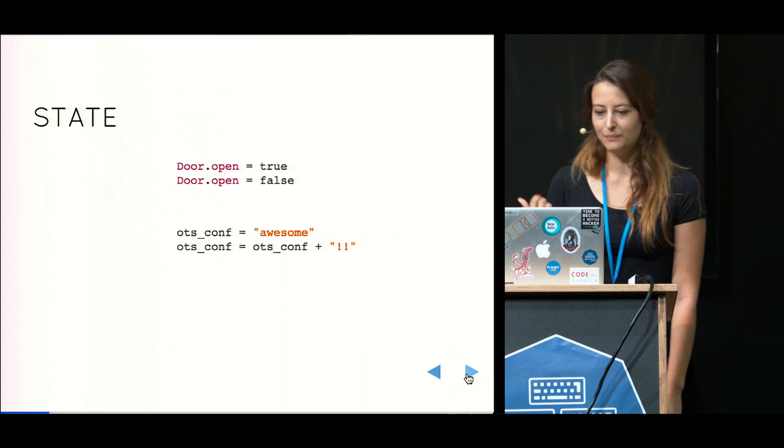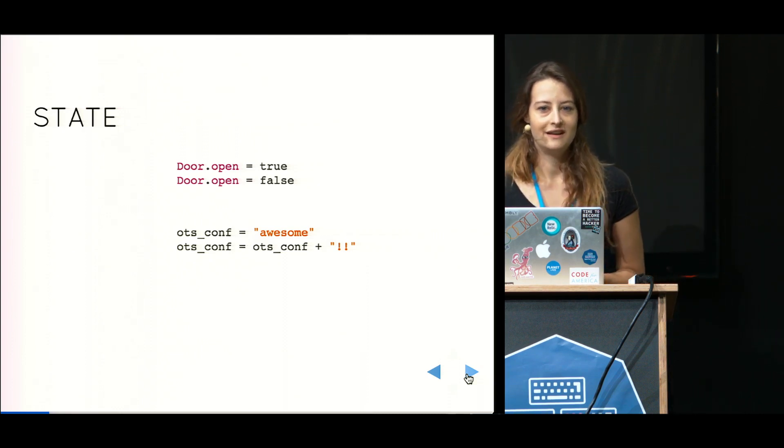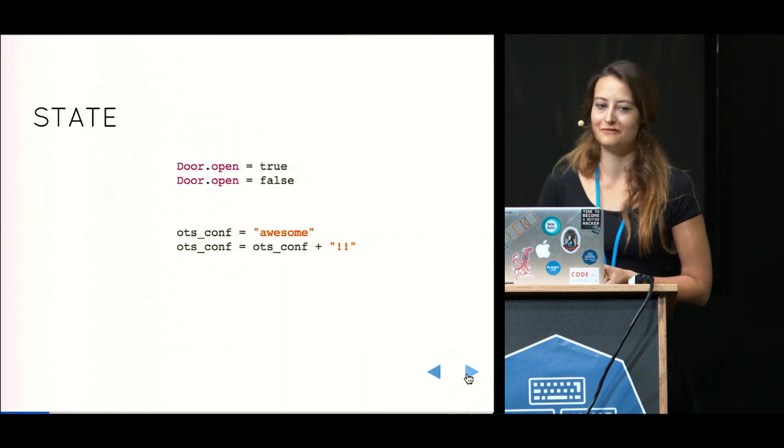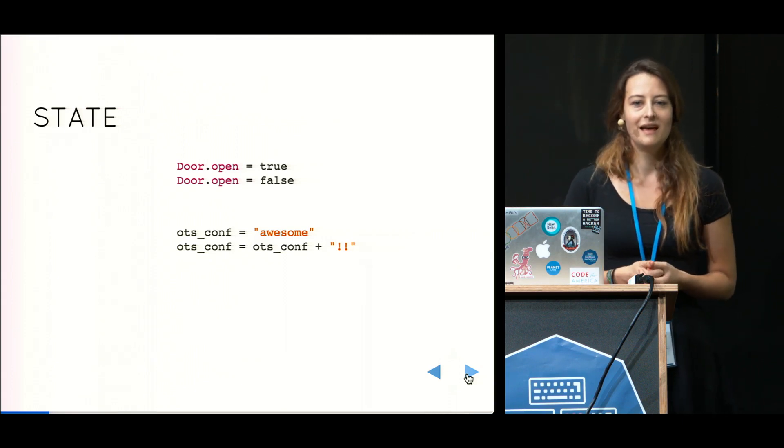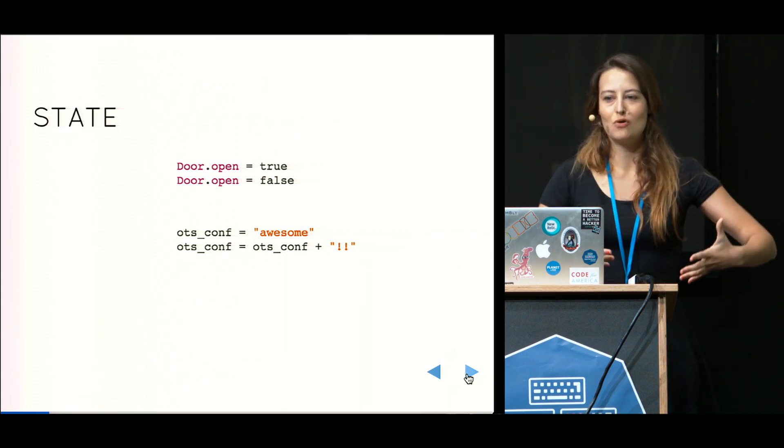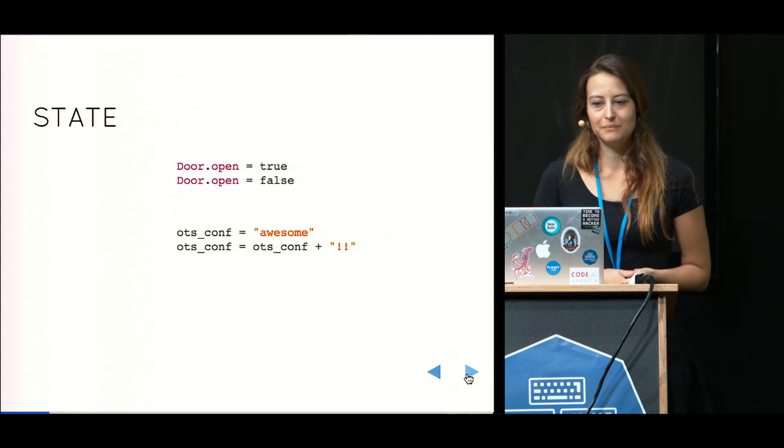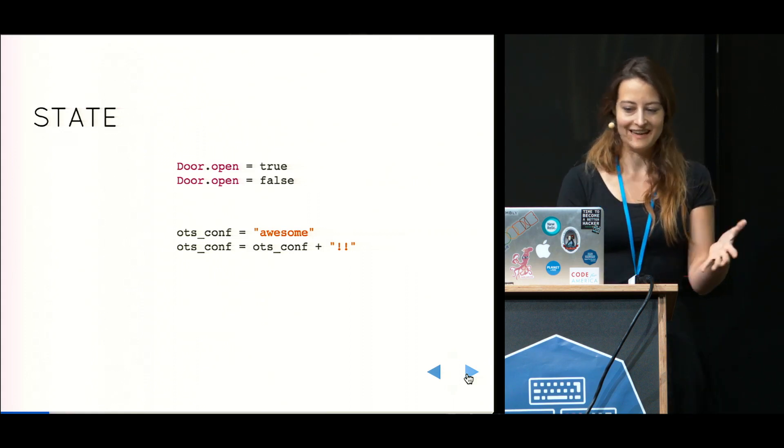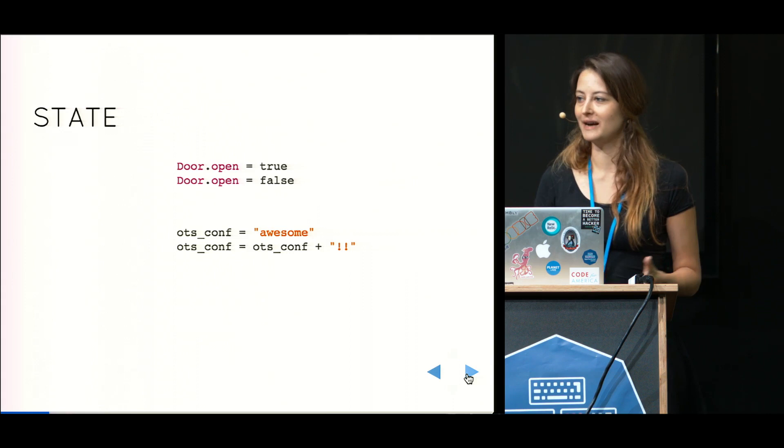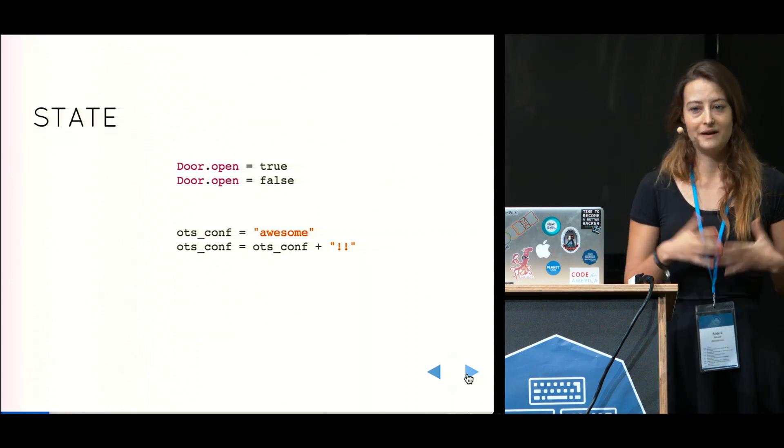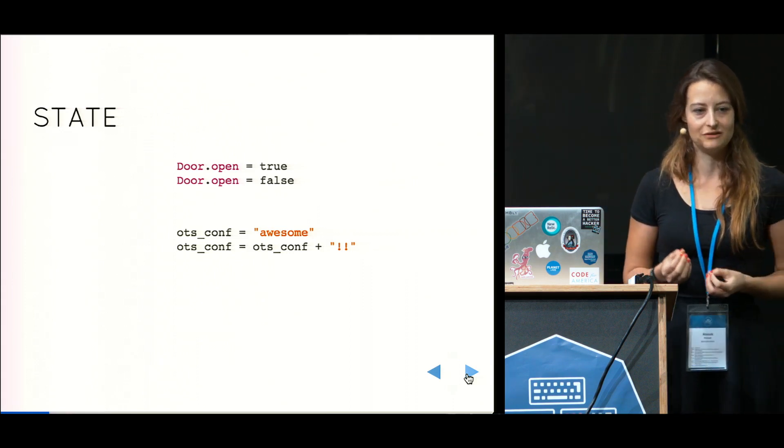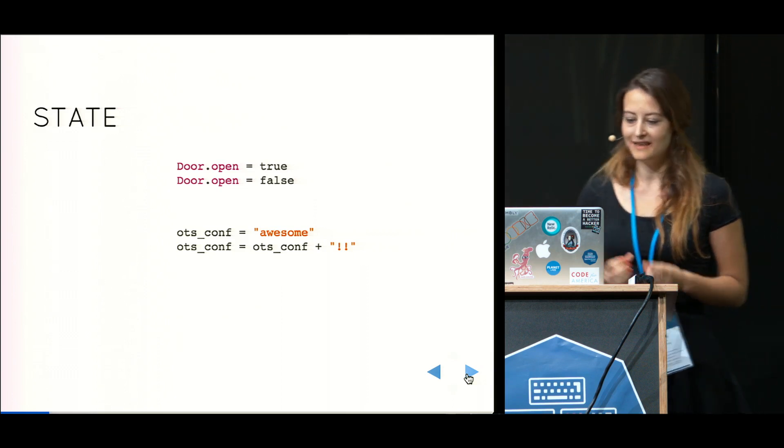Another example is the variable below, which is OTSconf. An awesome OTSconf. So OTSconf is awesome. Let's make that even more awesome by adding two exclamation marks. That's very simple. You just take the variable and add two exclamation marks. By once again changing the state of this variable. And that's important.